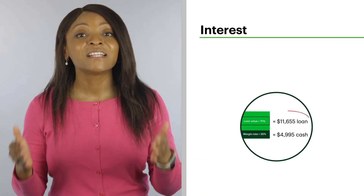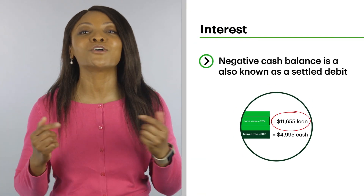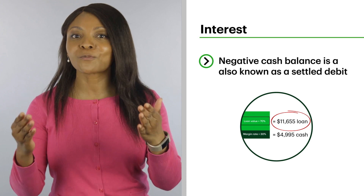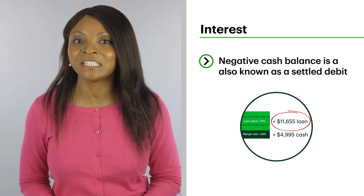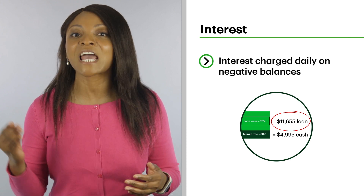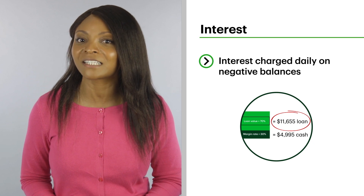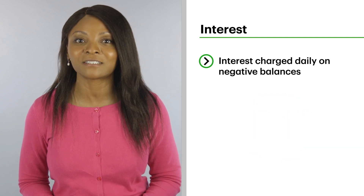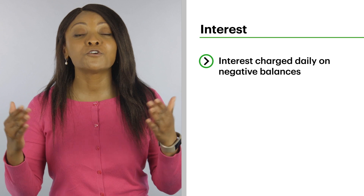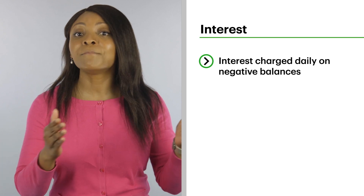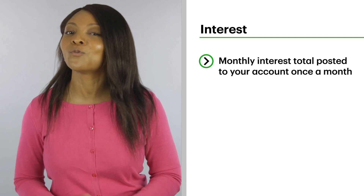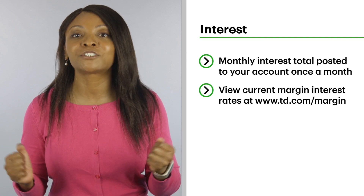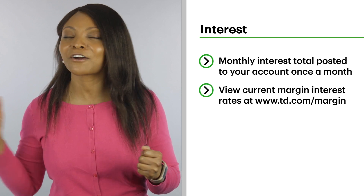In our example, the account's negative cash balance is also known as a settled debit. This means you're borrowing cash from TD, and interest will be charged every single day that the negative balance exists, and you'd be liable for any interest charges. If you do accrue any interest charges, the monthly total is posted to your account once a month. To see what the current margin interest rates are, check out our website.